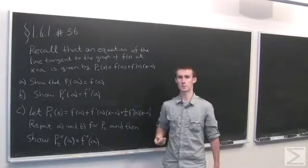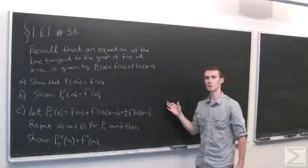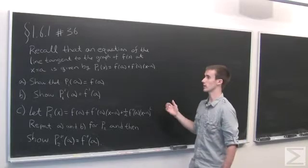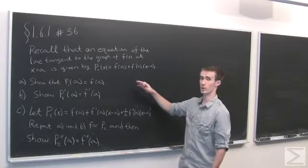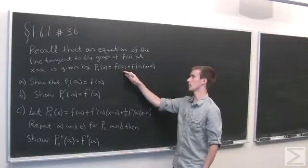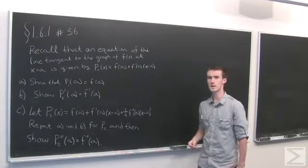At problem number 36 of section 1.6.1, we're asked to recall the equation of the line tangent to the graph of a function f(x). It's given at the point a, and is given by the equation f(a) + f'(a)(x - a).